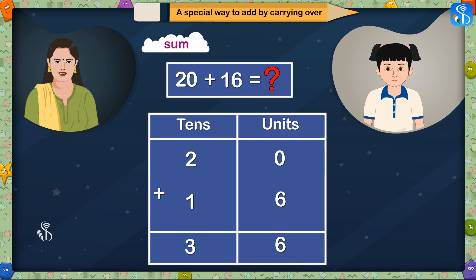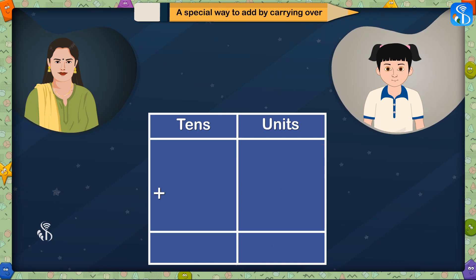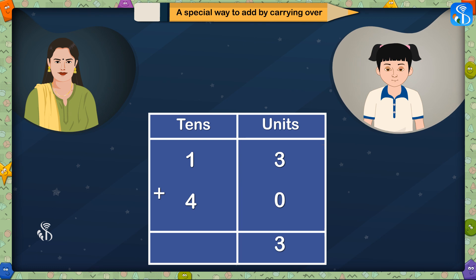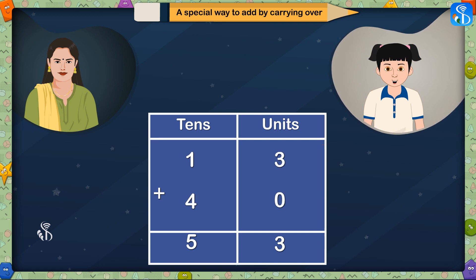Now you will have to solve this one. 13 plus 40 is equal to — Madam, this sum is similar to the first one. If we add 0 units to 3 units, the answer will be 3 units. And if we add 4 tenths to 1 tenth, the sum will be 5 tenths. Therefore, 13 plus 40 is equal to 53.